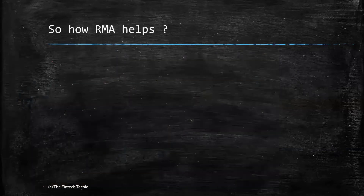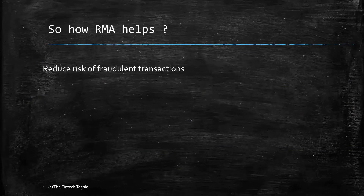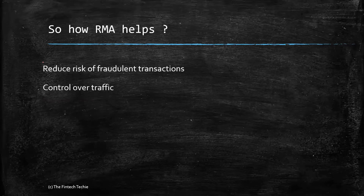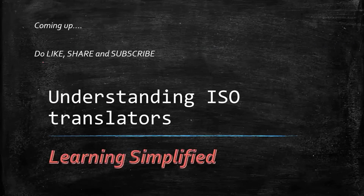So we have seen what RMA is, and we now get a sense of how RMA helps. It actually reduces the risk of fraudulent transactions by limiting communication to those counterparties whom you trust, and of course there is better control over traffic. In the next session, we are going to understand more about ISO translators. Thank you and keep watching.